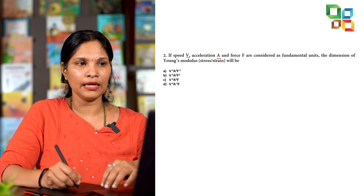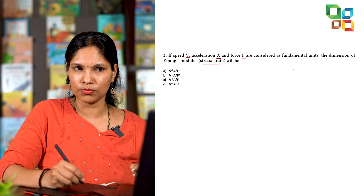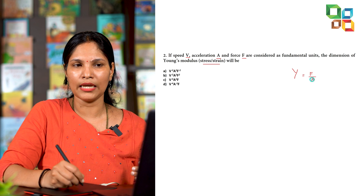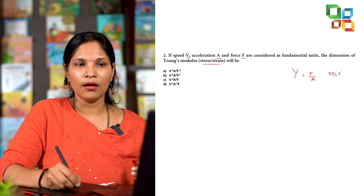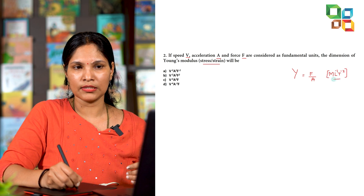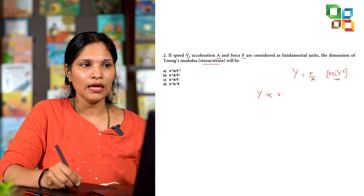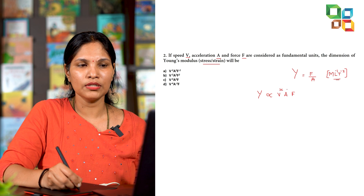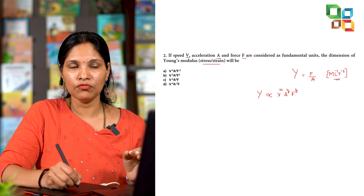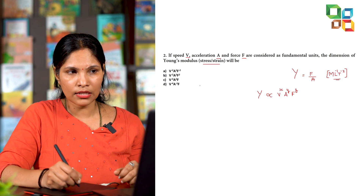Moving to the second example: given speed V, acceleration a, and force F as fundamental quantities, find the dimensional formula of Young's modulus. Young's modulus equals stress/strain; since strain is dimensionless, it's just stress = F/A, which has dimensions M·L·T⁻² / L² = M·L⁻¹·T⁻². The classical method would have you express Young's modulus as V^x · a^y · F^z, apply dimensional formulas, and compare to find x, y, z.